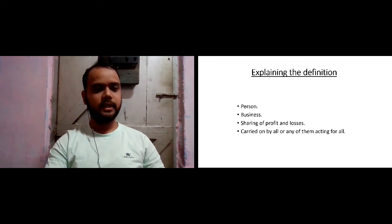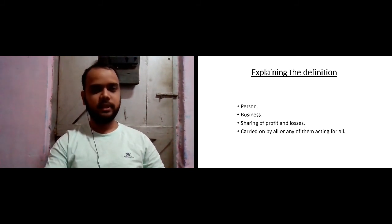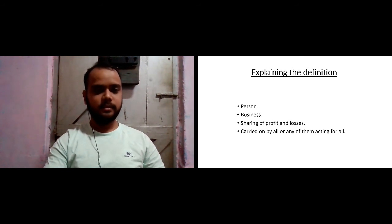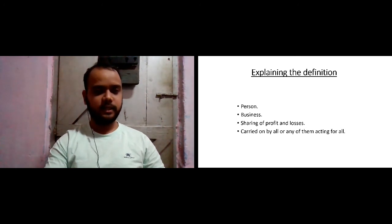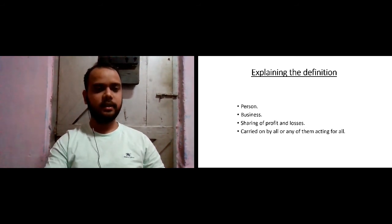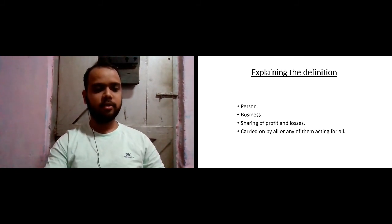Finally, we broke down the entire definition into four simple points. First, there is an association of persons — a person can be either natural or artificial. Next, there is a business — which can be trade, profession, or any form of activity. You carry on that business in order to earn profit, and there may be losses as well, so you need to share both profit and losses among the partners.